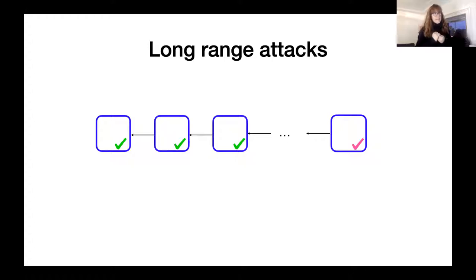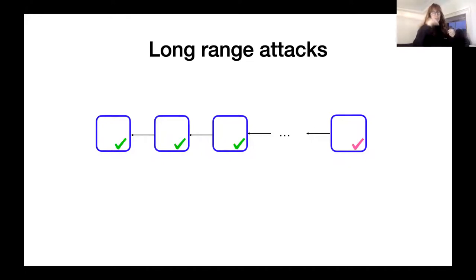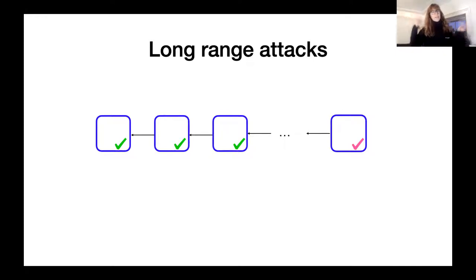In a proof-of-stake setting, each block is created only by validators — they sign the blocks. Over time, the set of validators will change: some will leave the network. Here on my slide, we start with a set represented by a green check mark, and then later they have all left the system and we have new validators shown in pink.